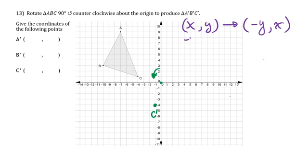For point B, currently at (negative 10, 3): applying the rule, the new x is the opposite of y, which is negative 3, and the new y is x, which is negative 10. So B prime is at (negative 3, negative 10).